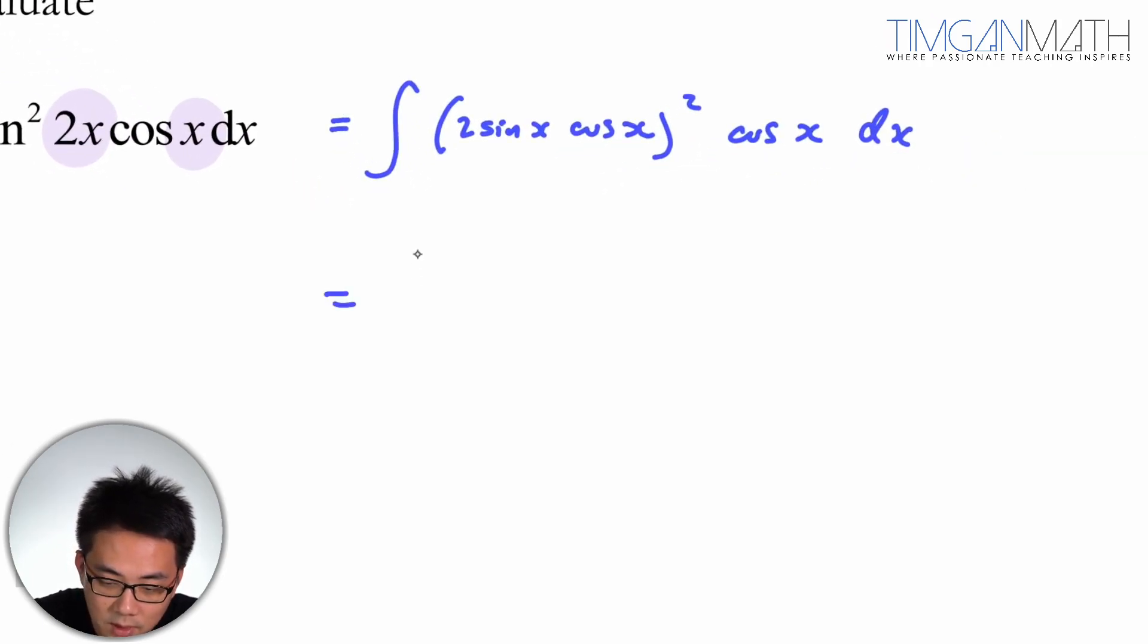So once this is done, what I'm going to do is actually just do this as 4 sine square x cosine square x cosine x dx.